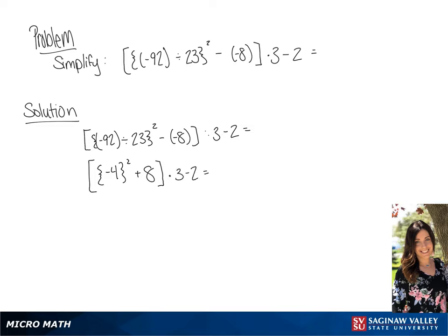Now we're going to simplify the exponent in the brackets. So negative 4 squared is 16, so in the brackets we have 16 plus 8. All of this times 3 minus 2.